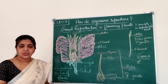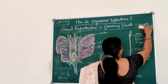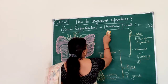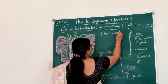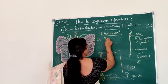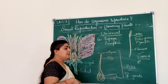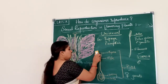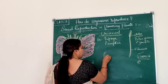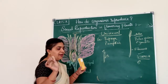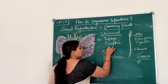Now let us see how pollination takes place. You should also know that there are two types of flowers. One is called the unisexual flower and the other is called the bisexual flower. Unisexual flowers have examples like papaya and pumpkin. When you look at a papaya flower, one flower will contain only the stamen and another flower will contain only the pistil.